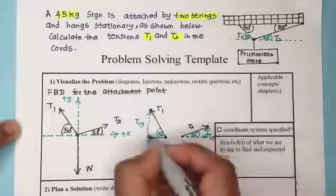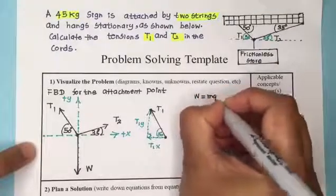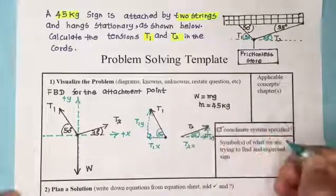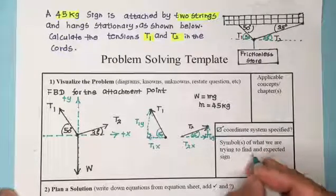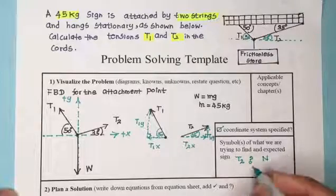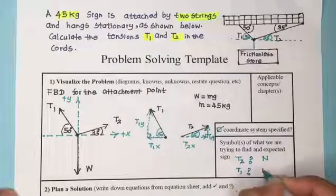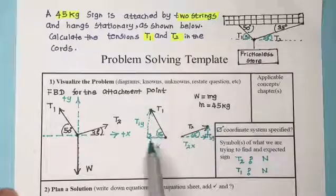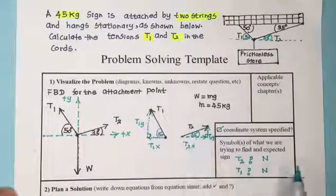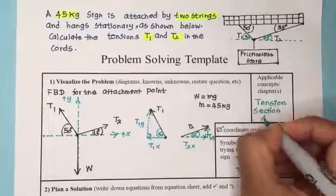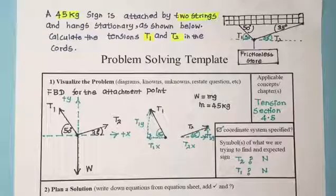Now let's look at the knowns and unknowns. The weight equals mg, and the mass of the sign is 45 kilograms. We've defined right and up as positive. We are solving for T2 and T1 — both are forces with units of newtons. The direction of each tension is indicated in the diagram using angles, not by a positive or negative sign.